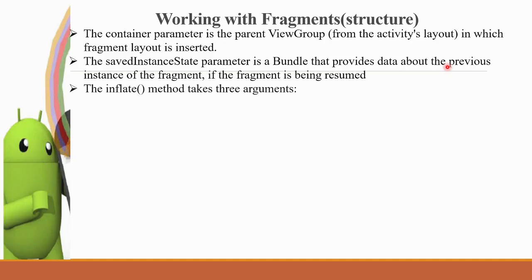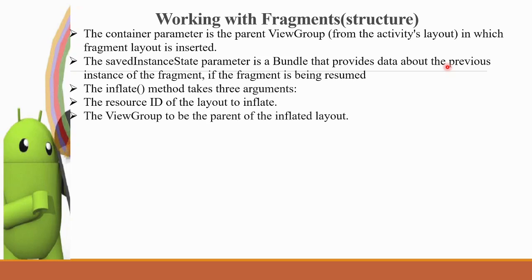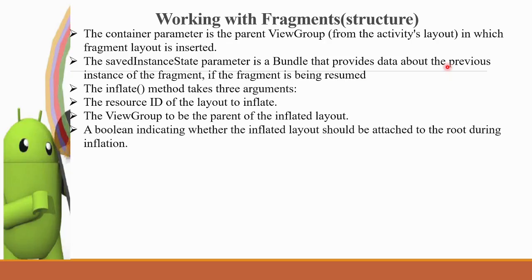Next, we will look at the inflate method. There are three arguments. The first is the layout — if we use the inflate method, we pass R.layout.example_fragment as the template layout. For the ViewGroup, it is the parent of the inflated view. The third is a boolean variable indicating whether the inflated layout should be attached to the root during inflation. Normally the default is false.